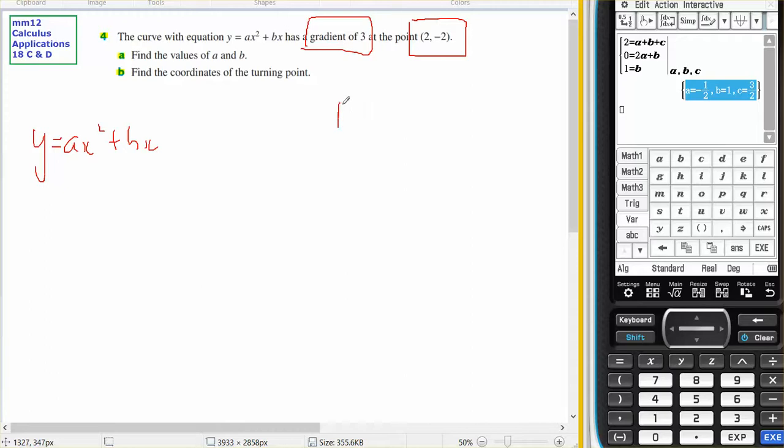Therefore, I know the gradient equals 3 when X equals 2, and I also know that Y equals negative 2 when X equals 2. So there's my two pieces of information out of that one sentence.